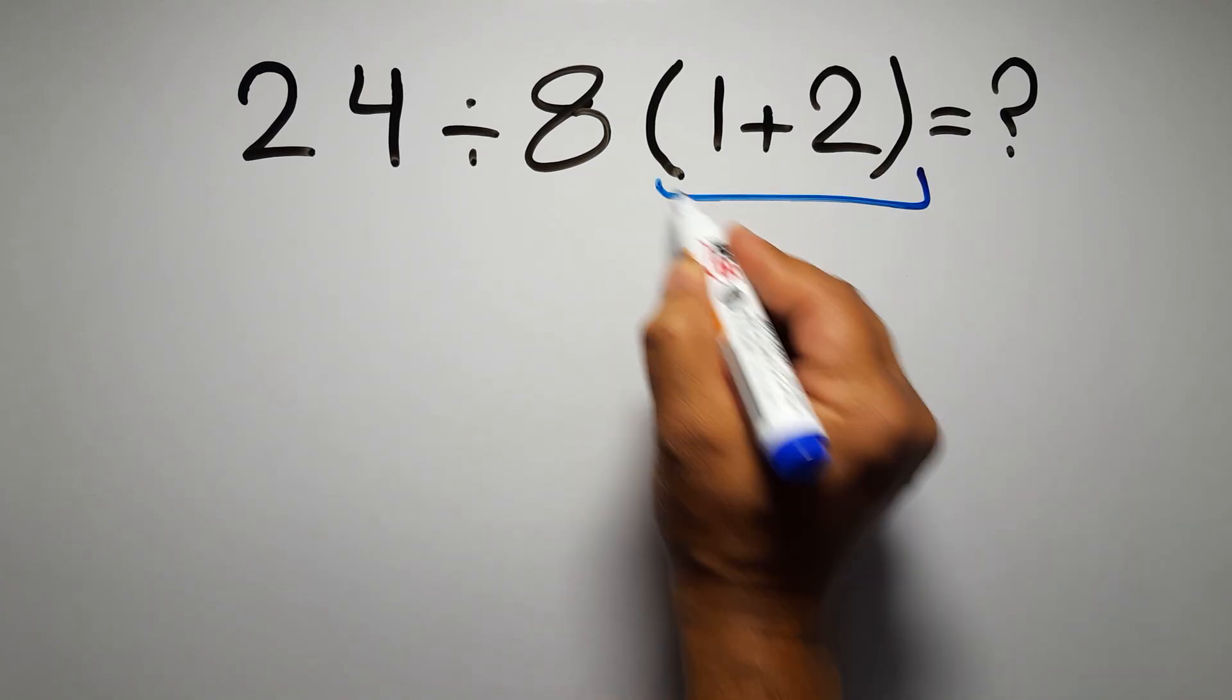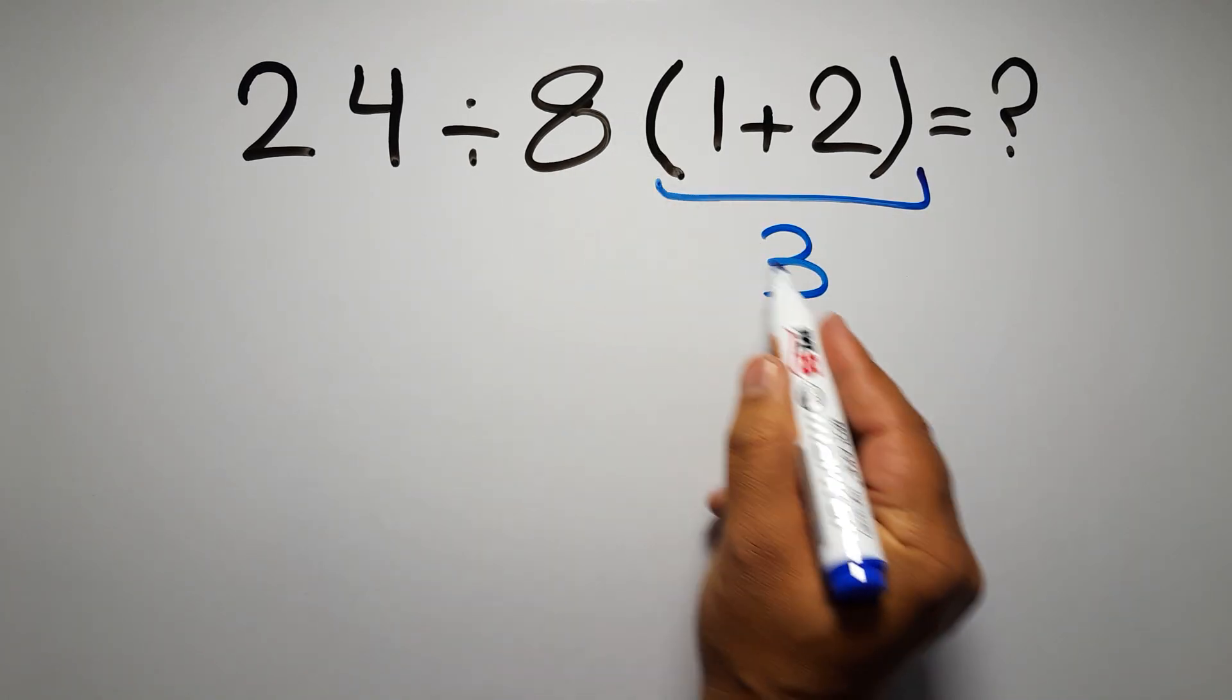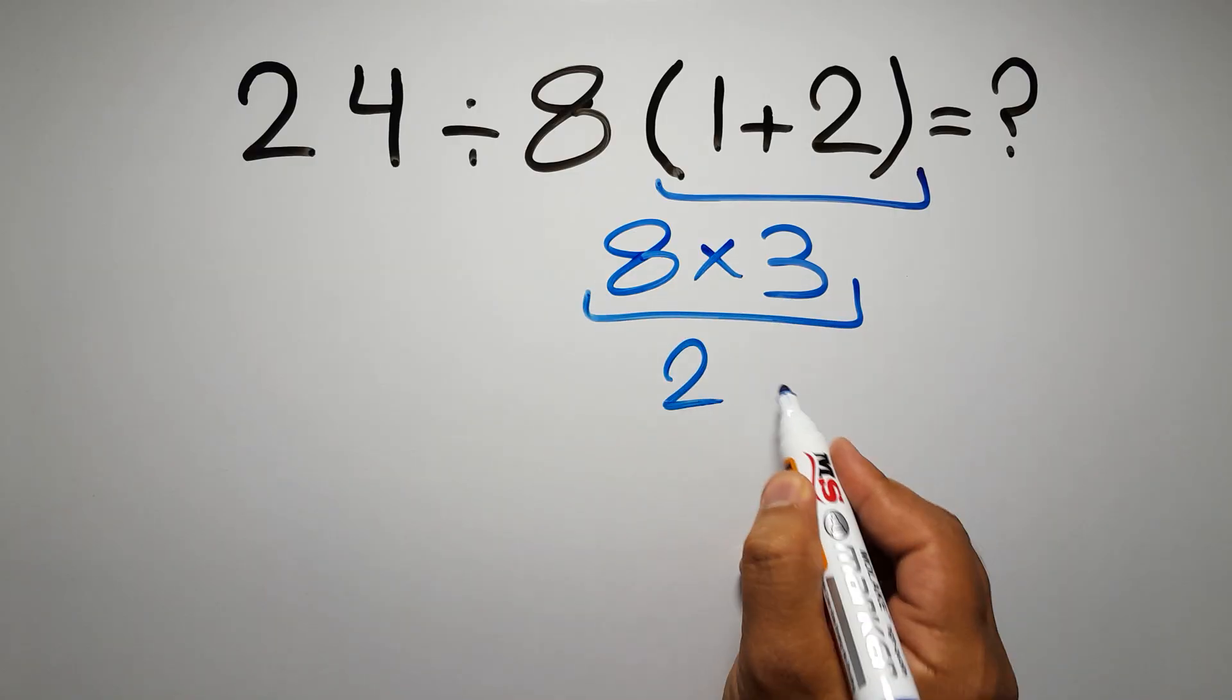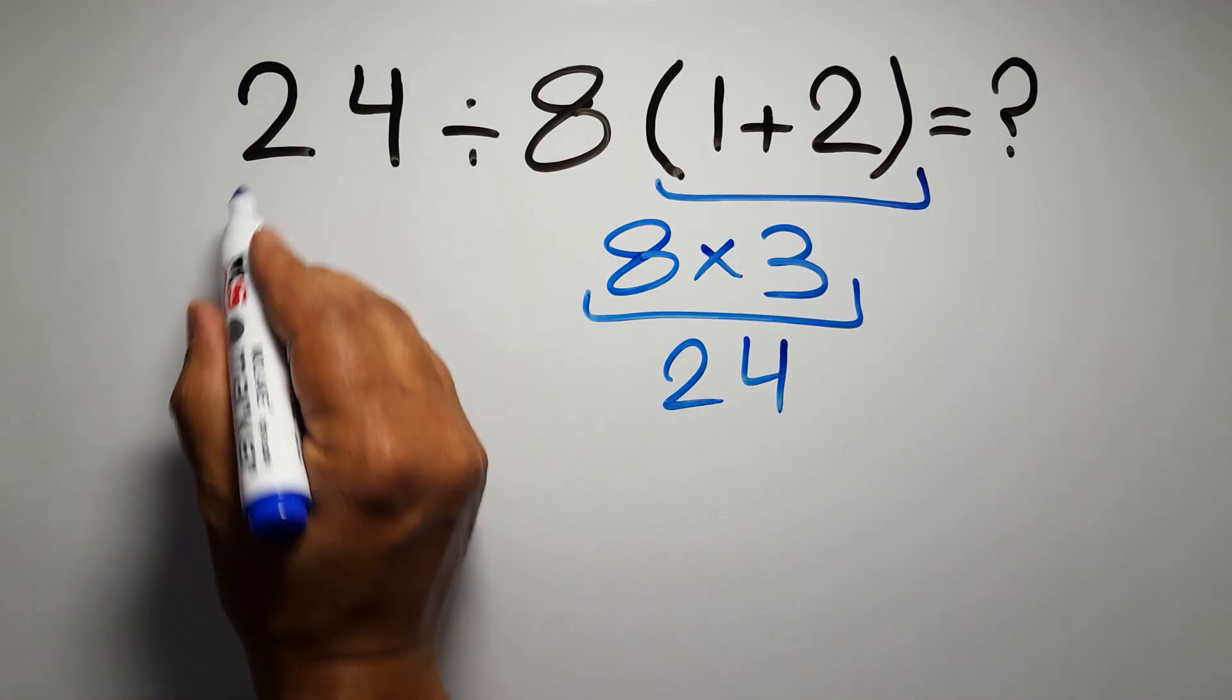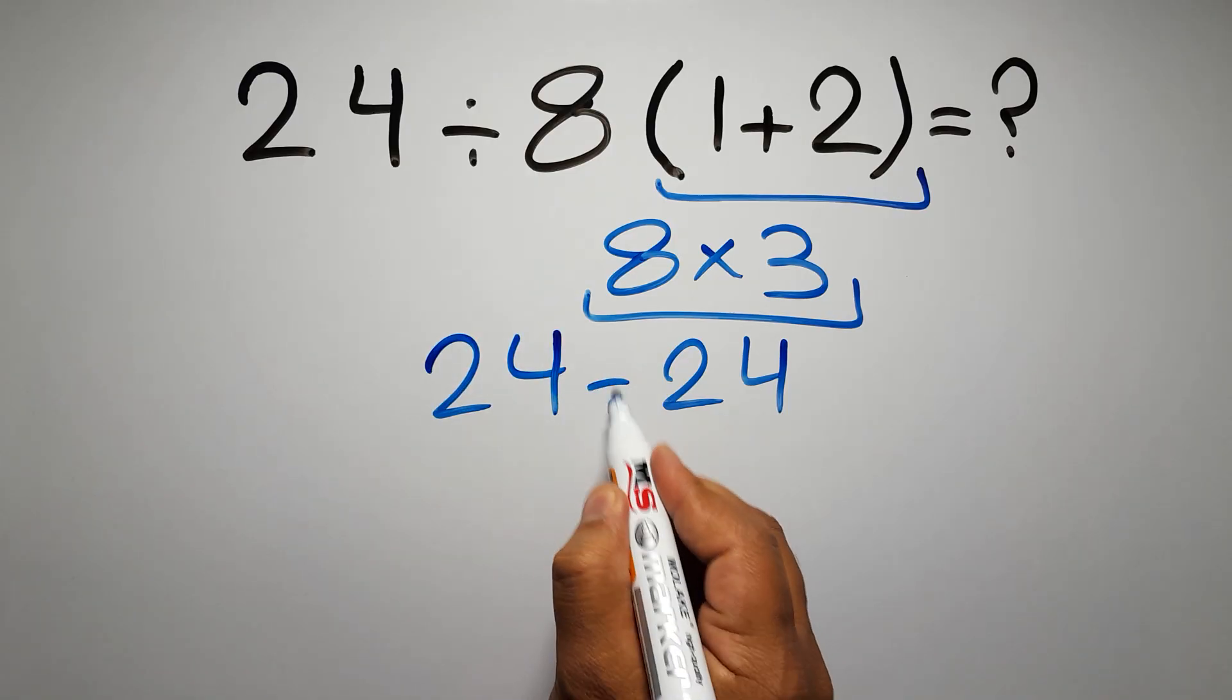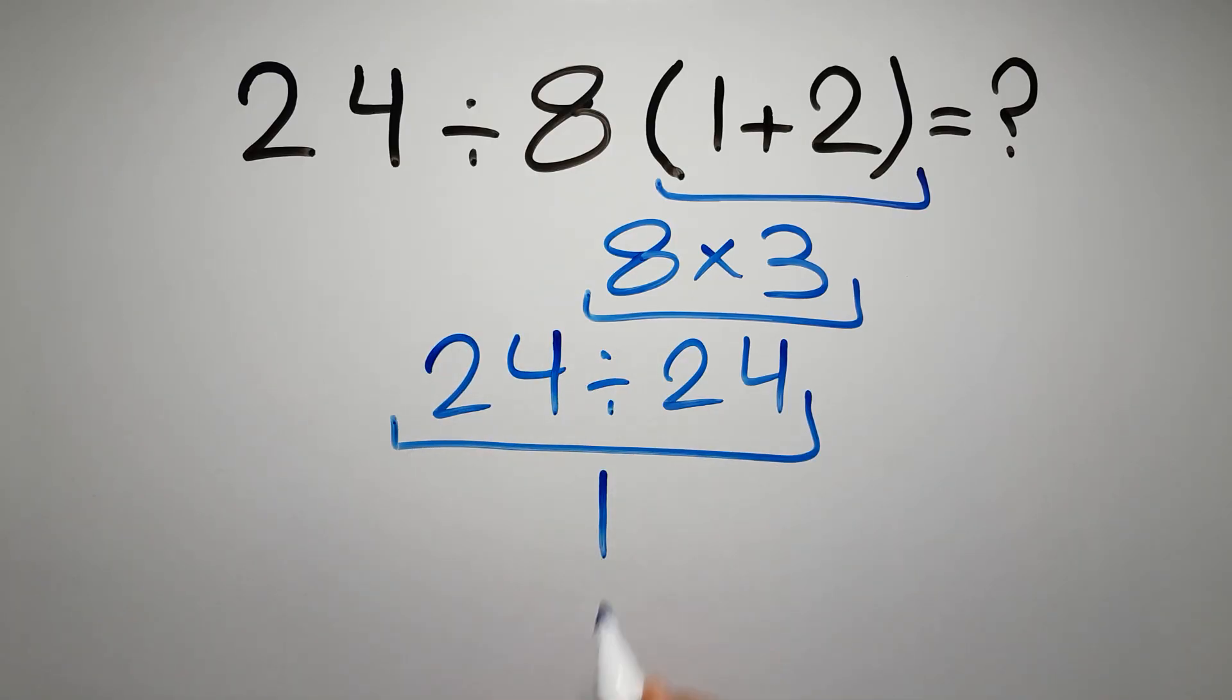1 plus 2 gives us 3, and 8 times 3 equals 24, so 24 divided by 24 equals 1, but this answer is not correct.